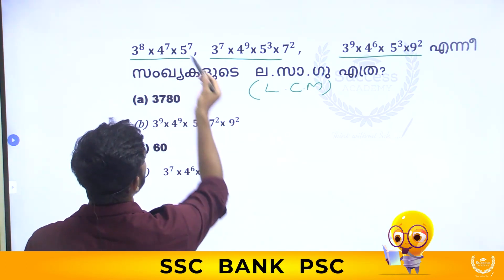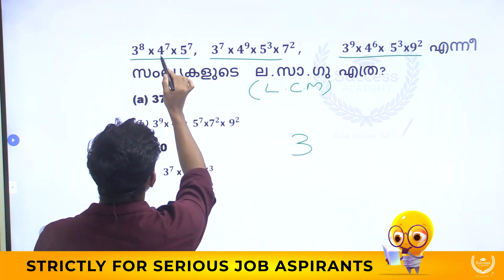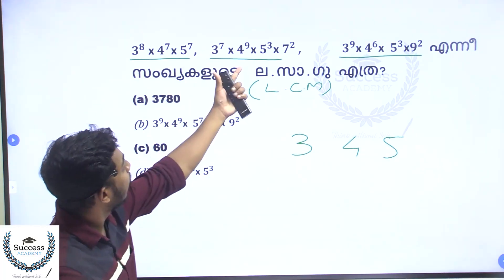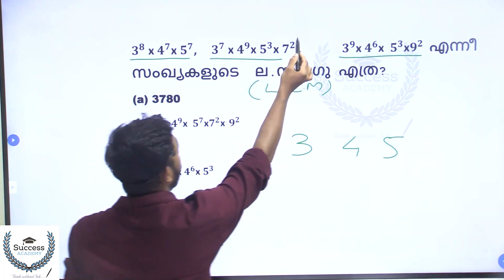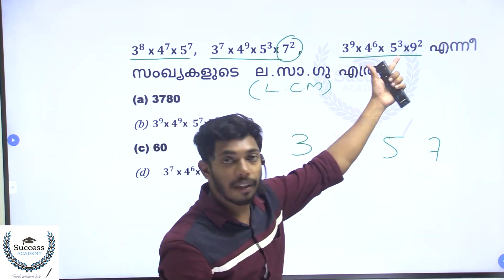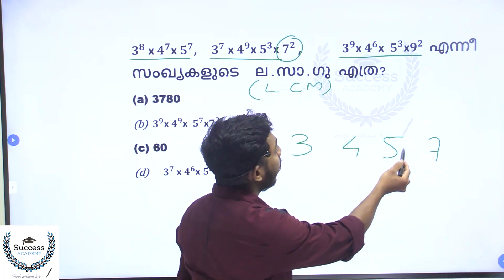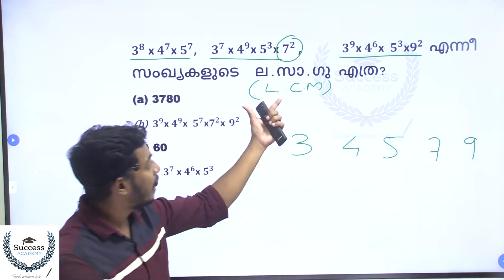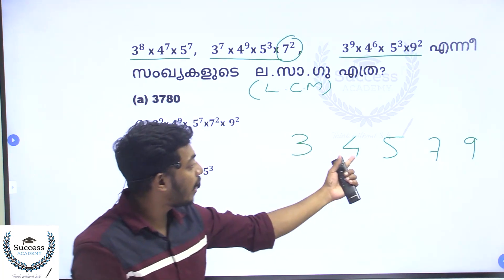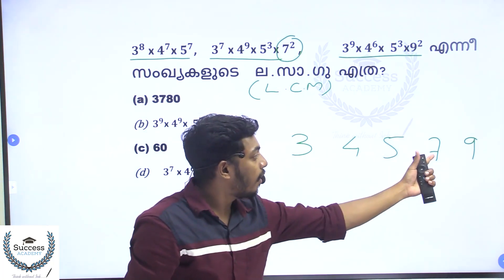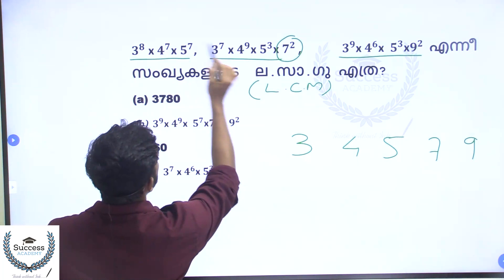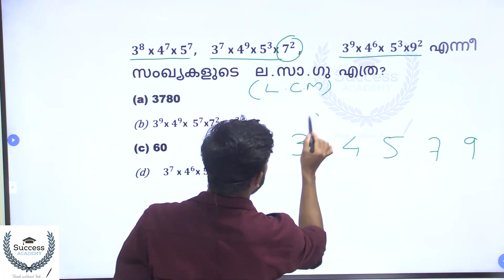If you are working with the same coefficients and terms, you can symbolize. The bases are 3, 4, 5. Look at the power side. At the same time, 3, 4, and 5 appear with base 7 as well. We are doing LCM — we take the highest power for each base. 3 raised to 8, 3 raised to 7, 3 raised to 9 — so 3 raised to 9 is the highest power.